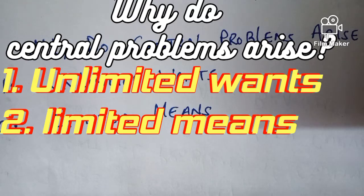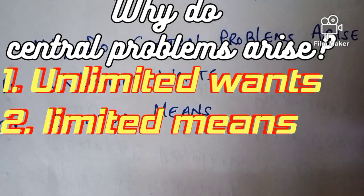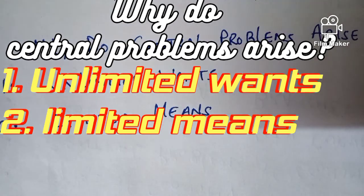Unlimited wants kya hoti hain? People, jo logo ki desire kabhi bhi unki wishes fulfill nahi hoti hain. Agar hume ek chiz mil jati hai to hum dousri chiz ke liye desperate rate hain. If we get one thing, we want the other one, we want more. So this is human nature. We have unlimited wants.